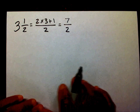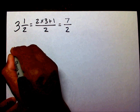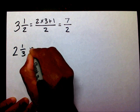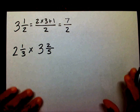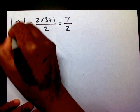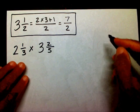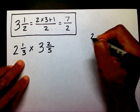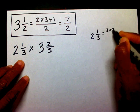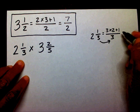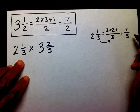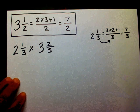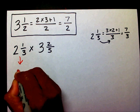Let's get started. Let's try two and one-third times three and two-fifths. The first thing I want to do is change my mixed numbers into improper fractions. So over here on the side, two and one-third equals three times two plus one over three. Three times two is six plus one is seven over three. So instead of two and one-third, I can write seven-thirds.